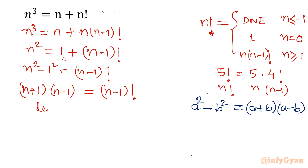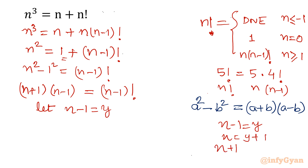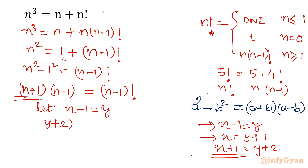Now let us use the substitution n minus 1 equal to y. Then n equals y plus 1, and n plus 1 equals y plus 2. Substituting into our equation, (y+2) times y equals y factorial. Since y factorial can be written recursively as y times (y-1) factorial, we divide both sides by y.